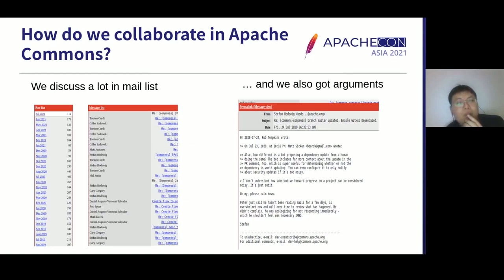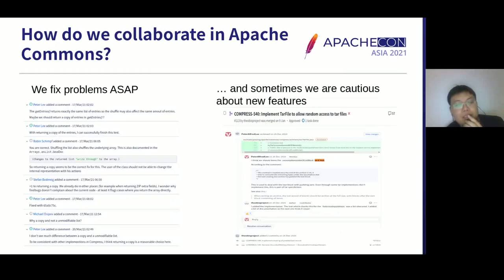If you want to participate in the Apache Commons community, don't forget to subscribe to the mailing list. We try to fix bugs and problems in JIRA as soon as we can — most problems get a response within a week and some minor problems can be fixed within a day or two. We are also cautious about new features, as you can see from this pull request reviewed by committers 57 times.